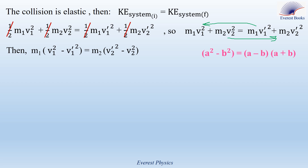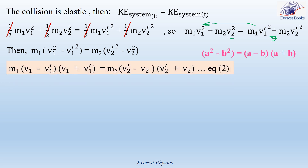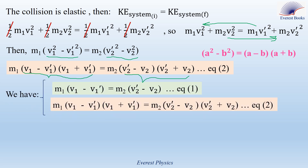Applying the difference of two squares: V1² − V1'² = (V1 − V1')·(V1 + V1'), and V2'² − V2² = (V2' − V2)·(V2' + V2). Now we have two equations: equation 1 from the momentum conservation and equation 2 from the energy conservation.